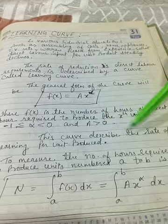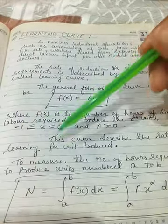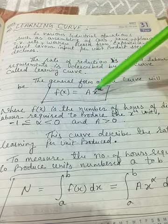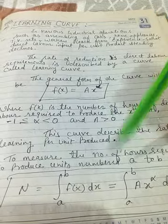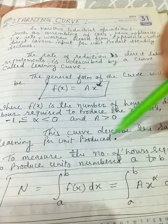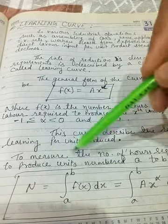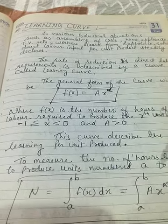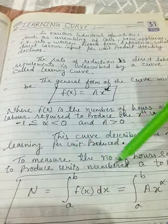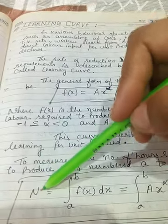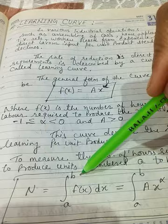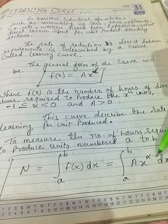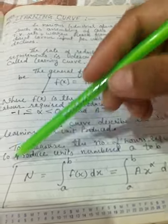This curve describes the rate of learning per unit produced. To measure the number of hours required to produce units numbered a to b, we use the integral: N = ∫ from a to b of f(x) dx, which equals ∫ from a to b of A·x^α dx.